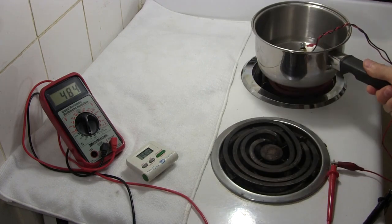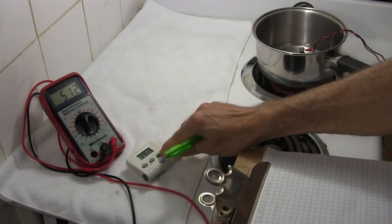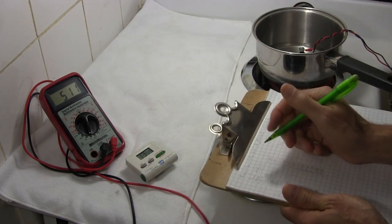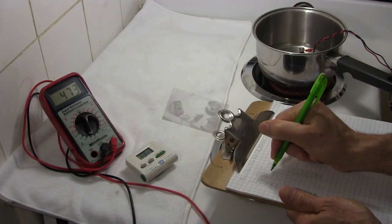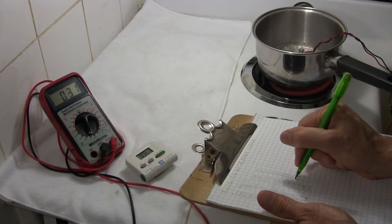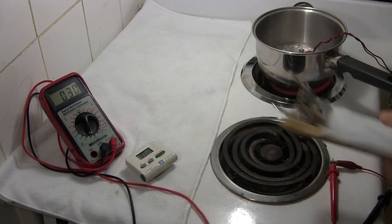I put the pot on the stove element, started the timer, and started recording resistance values from the meter every 10 seconds. Once I reached 31 ohms on the thermistor, which is around boiling, I stopped recording.